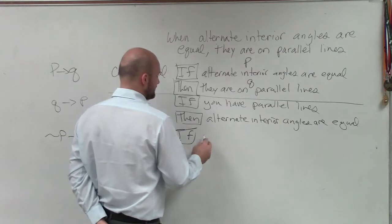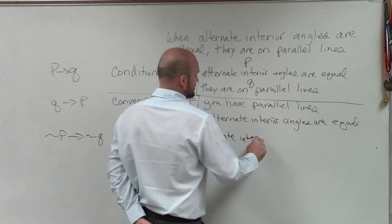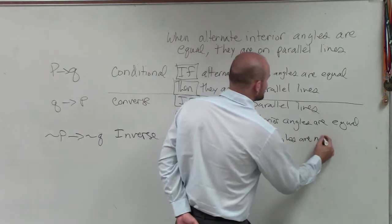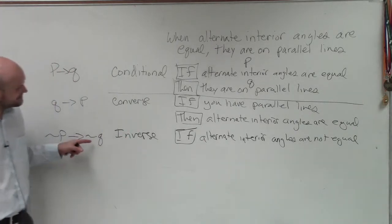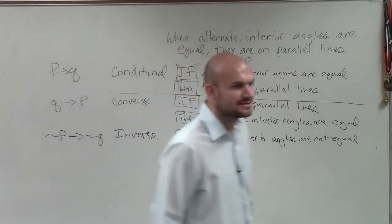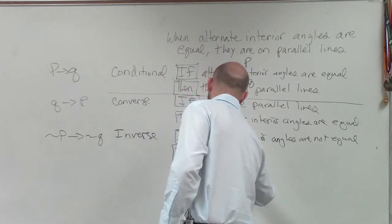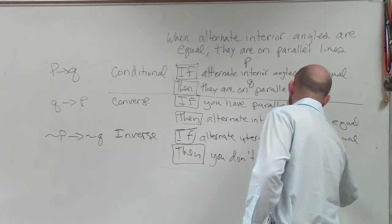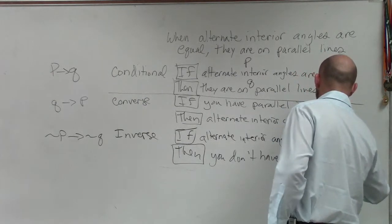So you can say if alternate interior angles are not equal. So if alternate interior angles are not equal, then it's the negation of Q as well. So then what's the opposite of you have parallel lines? You don't have parallel lines. Then you don't have parallel lines. Parallel lines. OK?